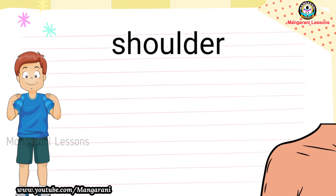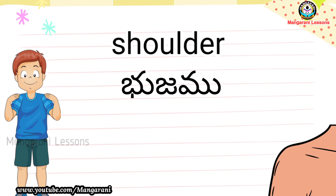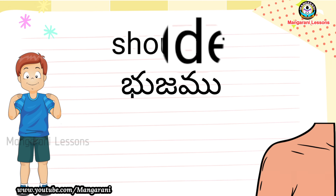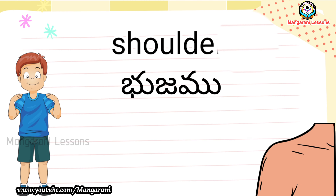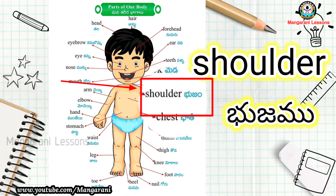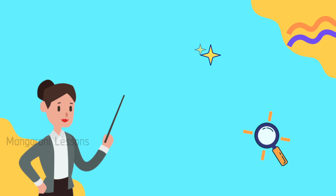Word of the day is 'shoulder.' Shoulder ante bhoja moani ardham. S-H-O-U-L-D-E-R. Shoulder. Pillaru, meeru meedictionary therichy, eccethrum yekadavundho uttianchanddi. Shoulder annet pad anni uttianchanddi pillaru. Shoulder - S-H-O-U-L-D-E-R. Shoulder. Bhoja moan.